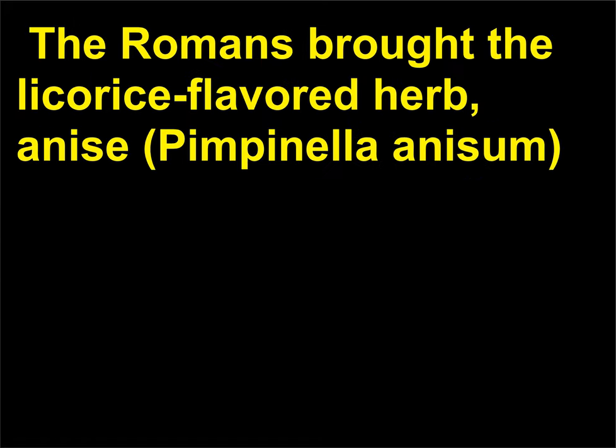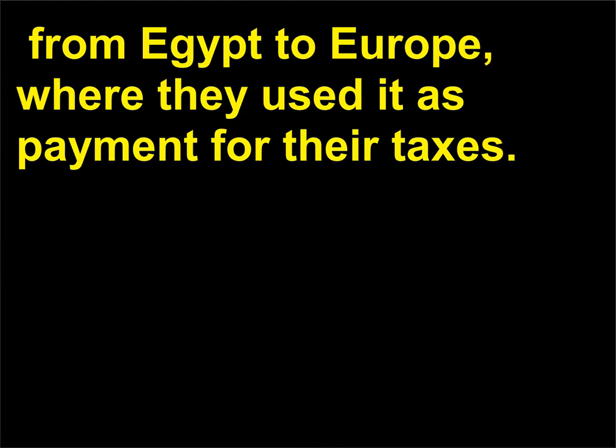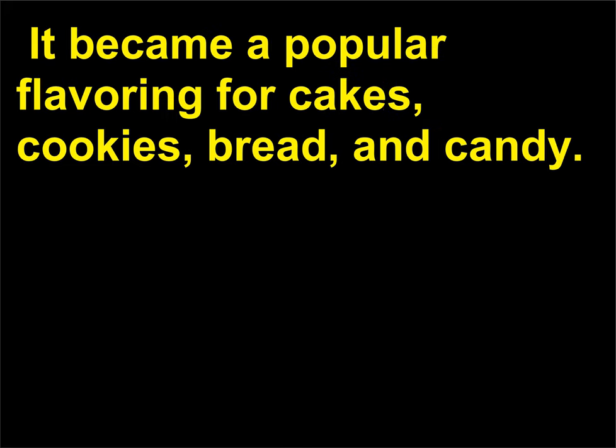The Romans brought the licorice-flavored herb anise (Pimpinella anisum) from Egypt to Europe, where they used it as payment for their taxes. It became a popular flavoring for cakes, cookies, bread, and candy.